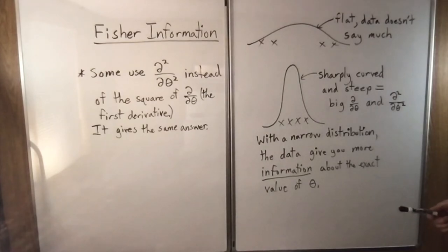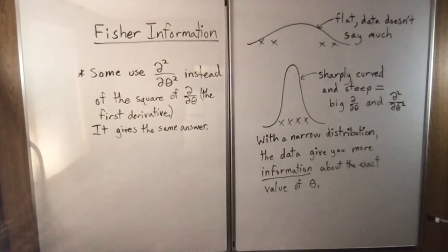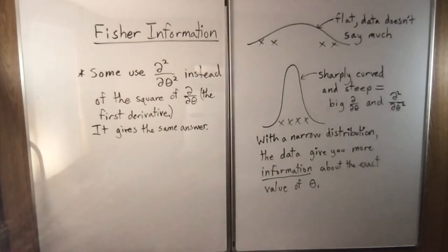What does Fisher information mean? If you have a flat, wide distribution, the data doesn't say very much about the value of theta. But if you have a sharply curved distribution, it does give you more information. That's what the Fisher information is trying to say — this distribution is sharply curved and steep.